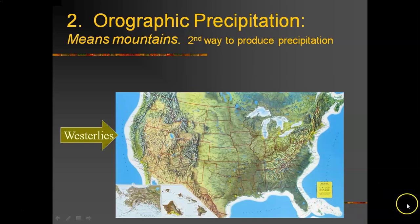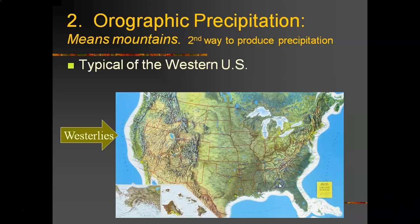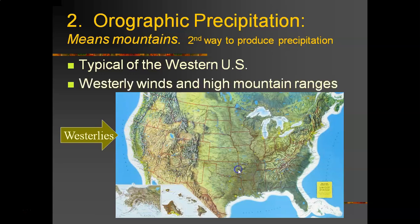Orographic precipitation does not occur in Louisiana at all, but it's very common in the Western United States where we have a lot of high mountain ranges running north to south. At the same time, we have predominant westerly winds with weather systems coming in off the Pacific and hitting these high mountain boundaries.